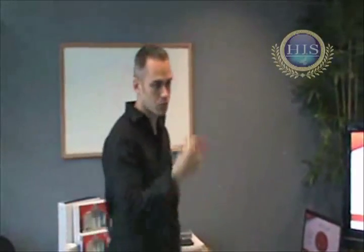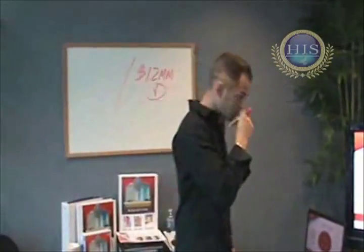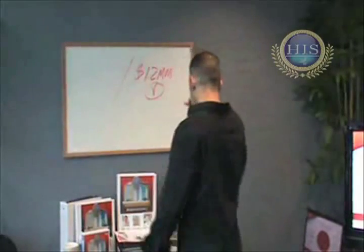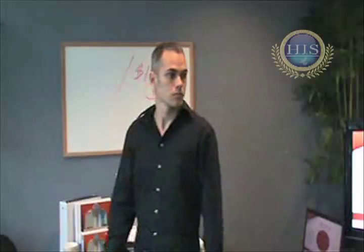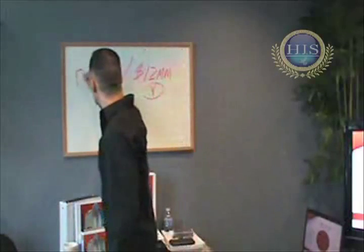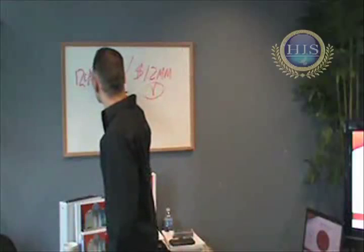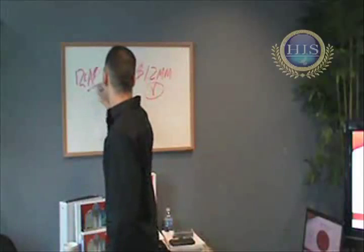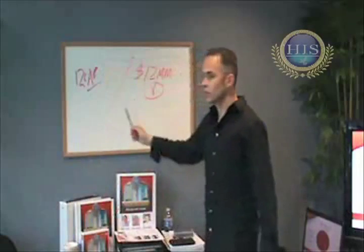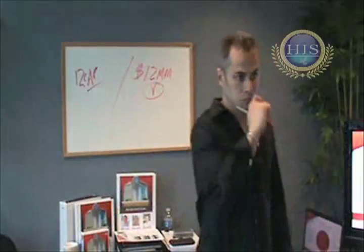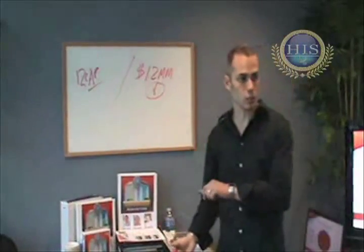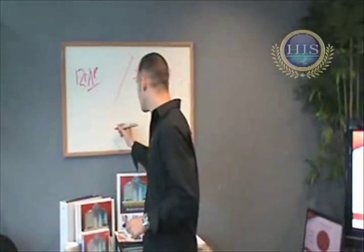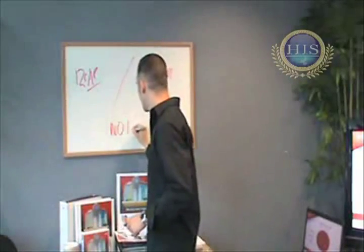Pick a cap rate. What kind of return would you want? 12%. You want a 12 cap? You've got a 12 cap. What are we trying to figure out now? What the income should be to justify this purchase. So we're trying to find out the NOI.